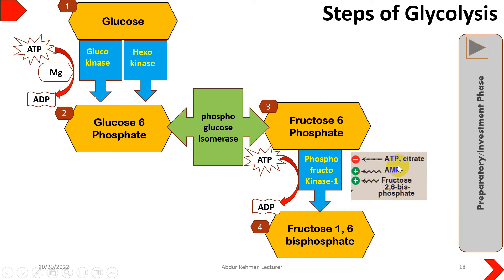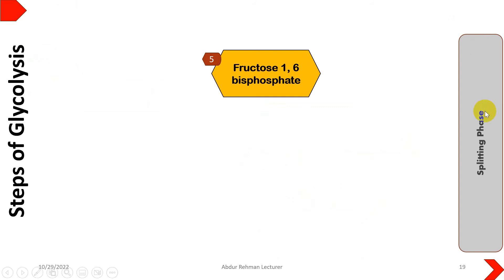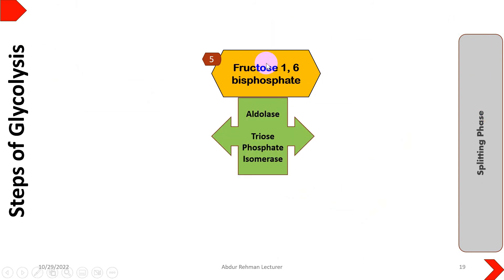Similarly, AMP (adenine monophosphate) or cyclic AMP, which acts as a second messenger, if present in high concentration in the cell, indicates the cell is deprived of energy. Additionally, if fructose 2,6-bisphosphate is in a larger concentration, both of these will give a positive feedback to move the process forward, resulting in glycolysis proceeding so that more ATP can be produced.